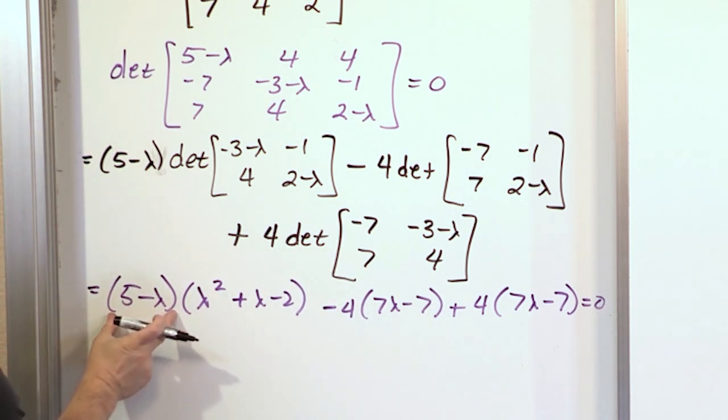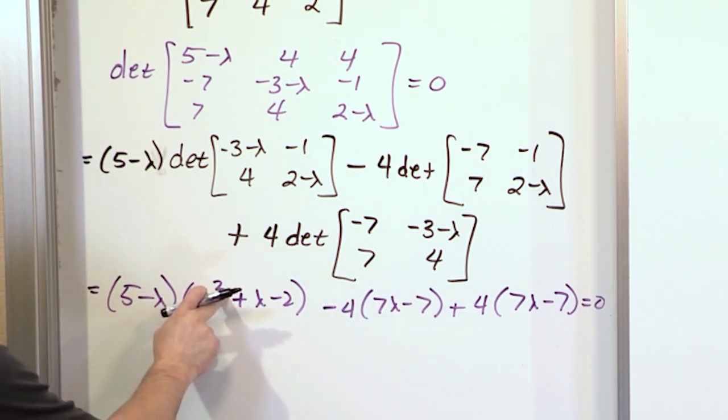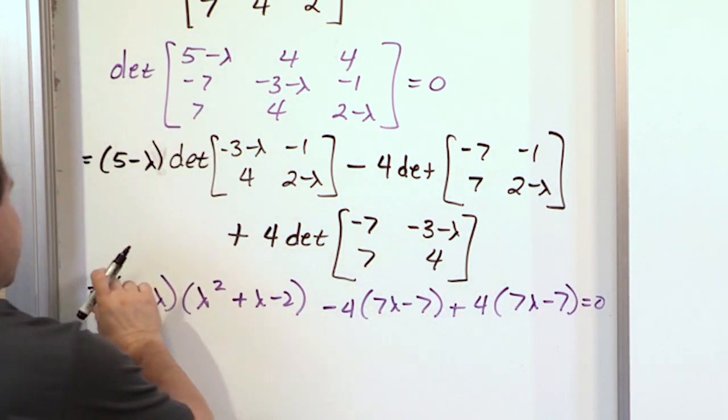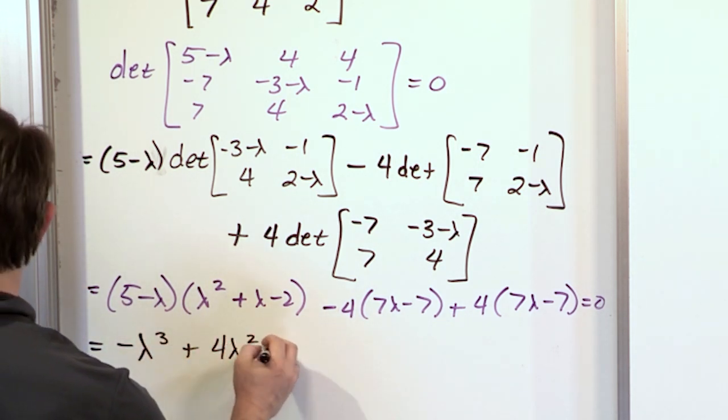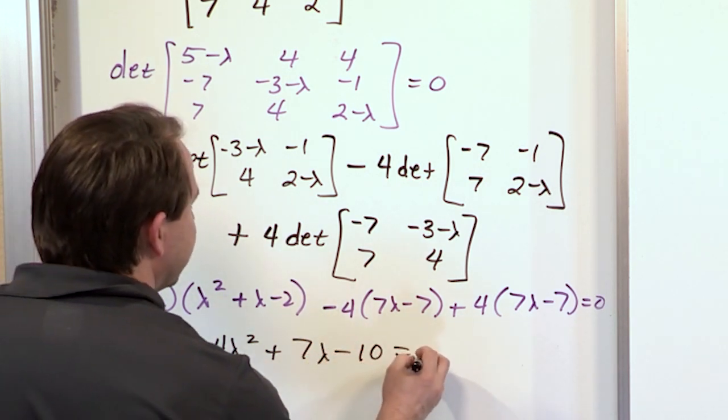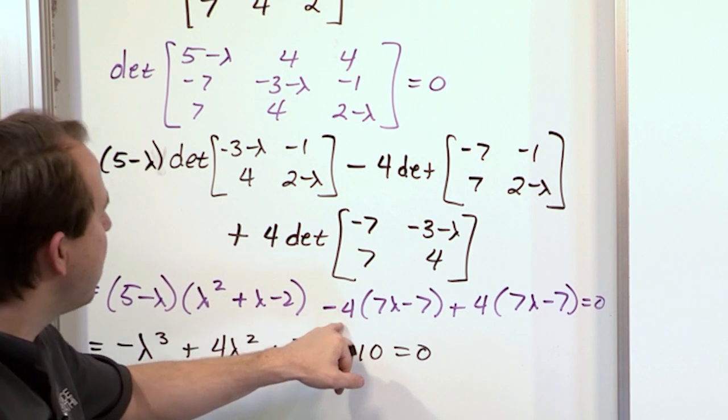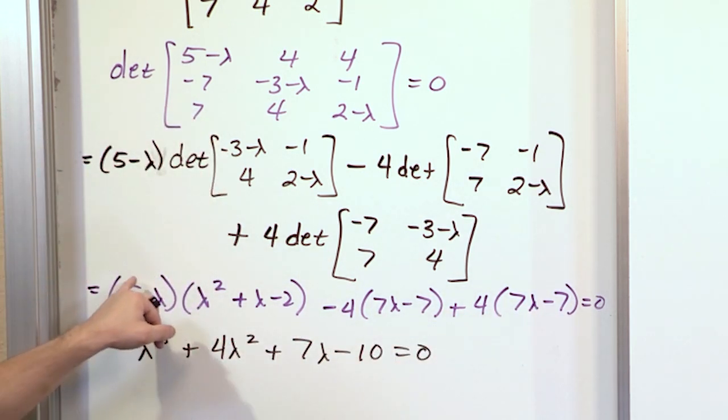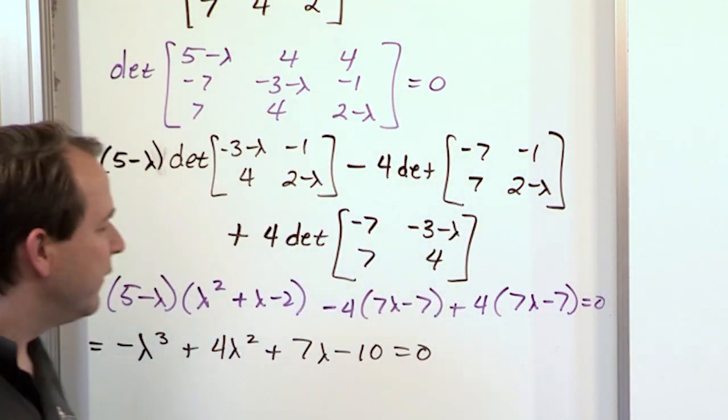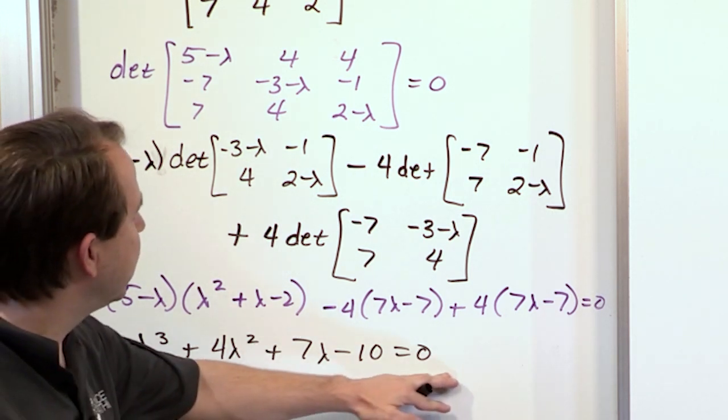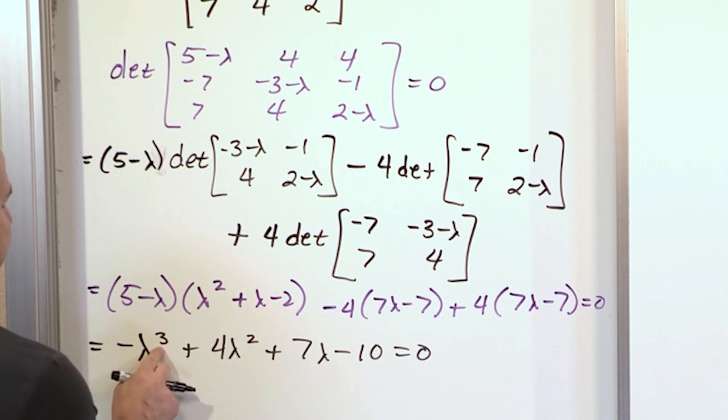When you get down to this level, I have this term multiplied by a polynomial of degree 2. Multiplying all of this stuff and simplifying terms just leads to a lot of algebra. But when you do all of that, you get negative lambda cubed plus 4 lambda squared plus 7 lambda minus 10 is equal to 0. It's just a lot of algebra, but what you end up with is this cubic polynomial here. And when you solve it, you should get three eigenvalues, one for each degree of the polynomial.